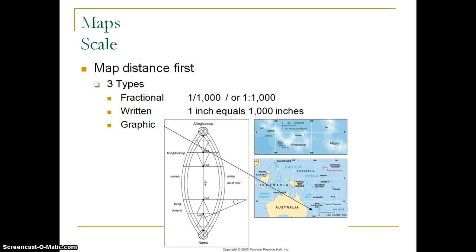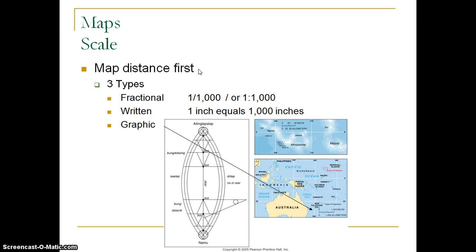When we talk about map scale, there are three main types that will be presented to you on maps: fractional, written, and graphic scales. Fractional scales are just like they sound — a fraction or ratio. Written scales are written out, for example, 'one inch equals 1,000 inches,' meaning one inch on the map equals 1,000 inches in the real world. A graphic scale is typically what you see most often on a map — a bar that gives you an idea of how far things are. The map distance is how far something is on the map and how it relates to distances in the real world.